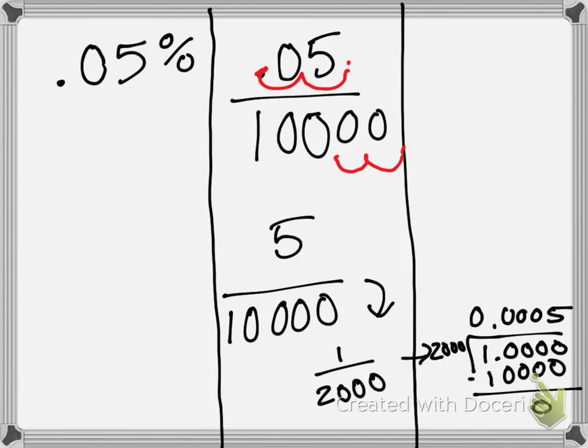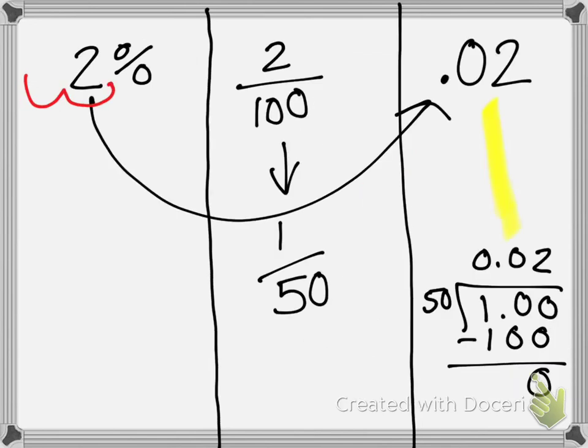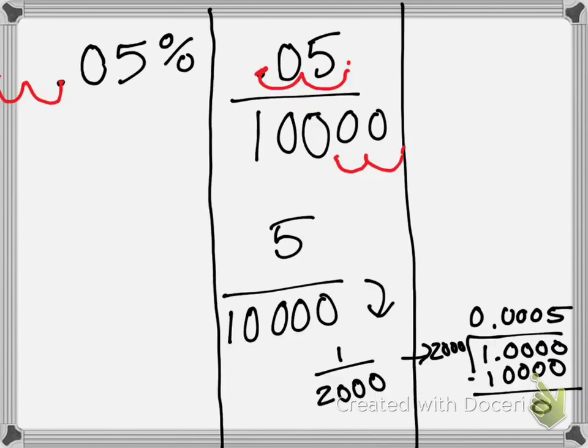Seeing as if we did it with the decimals, we'd have to move it 1, 2. We start where the decimal is not just at the end. In which case, we would get 0.0005. Same thing. So they're all the same.